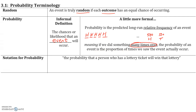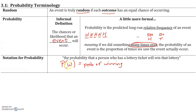Here's a notation for probability. If we're looking at the probability that a person who has a lottery ticket will actually win that lottery, we would say P for probability, and in the parentheses you put the event. So P of W is the probability of this ticket holder winning the lottery. You would read this as the probability of winning.